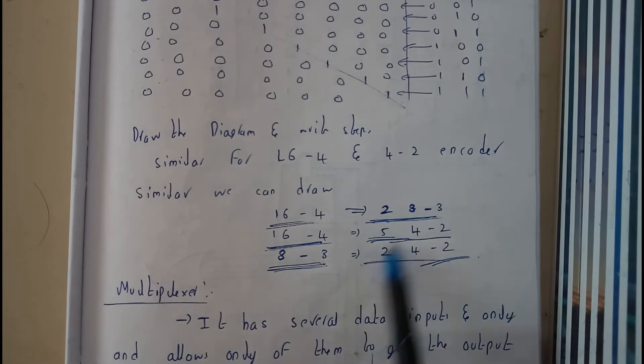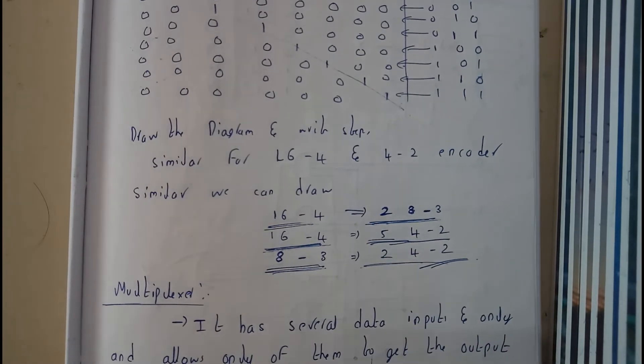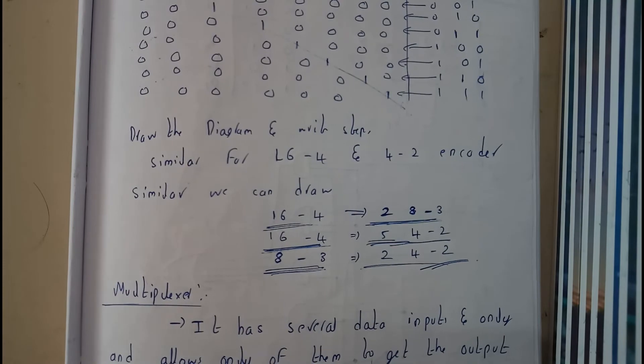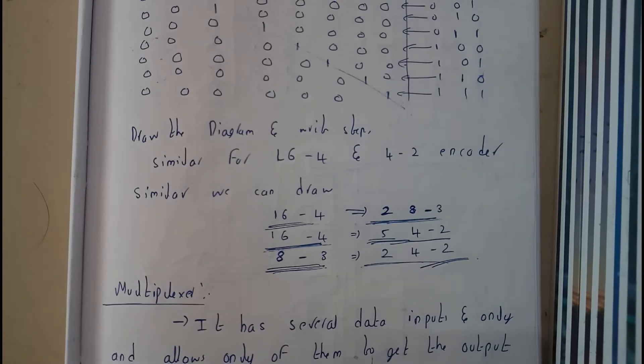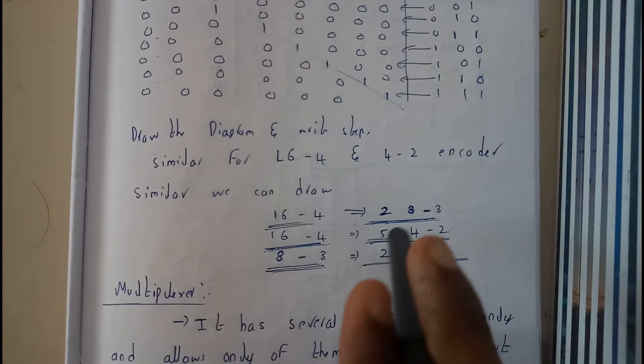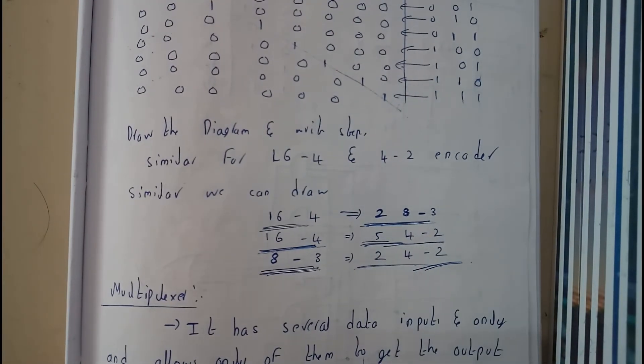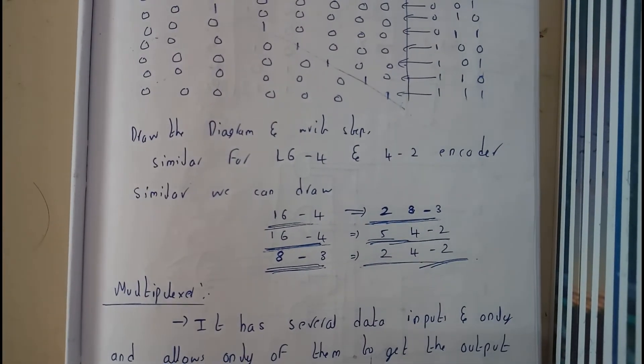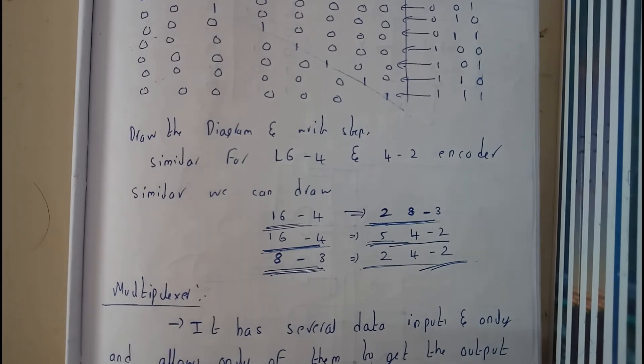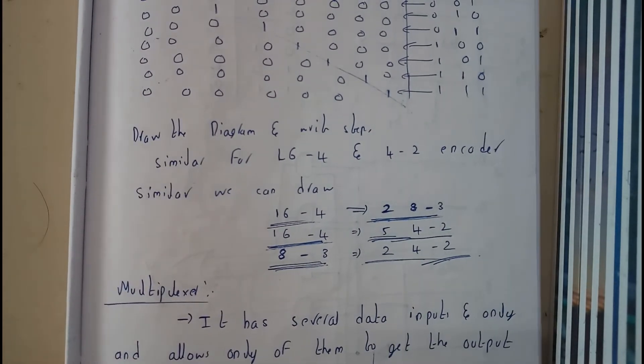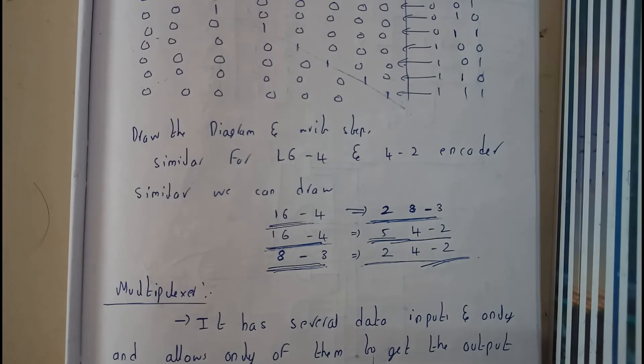This you can just solve, guys. That's really simple. There is no more confusion, which we have discussed clearly in decoders. Similarly, you'll be applying here also. That will be your homework. If you have any further doubts, you can comment down below. In the next tutorial, we'll be going through multiplexers. Thank you, thanks for watching.